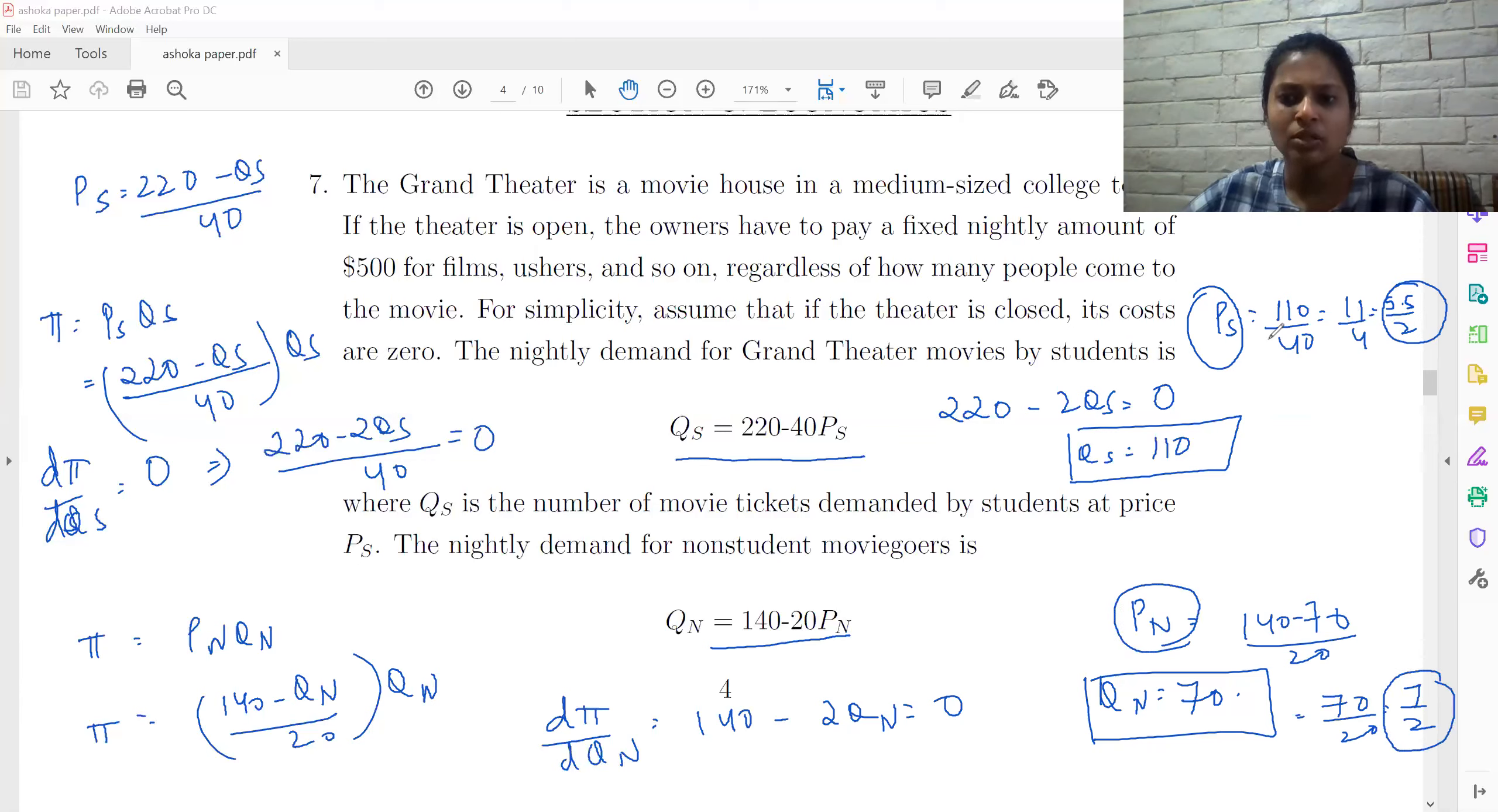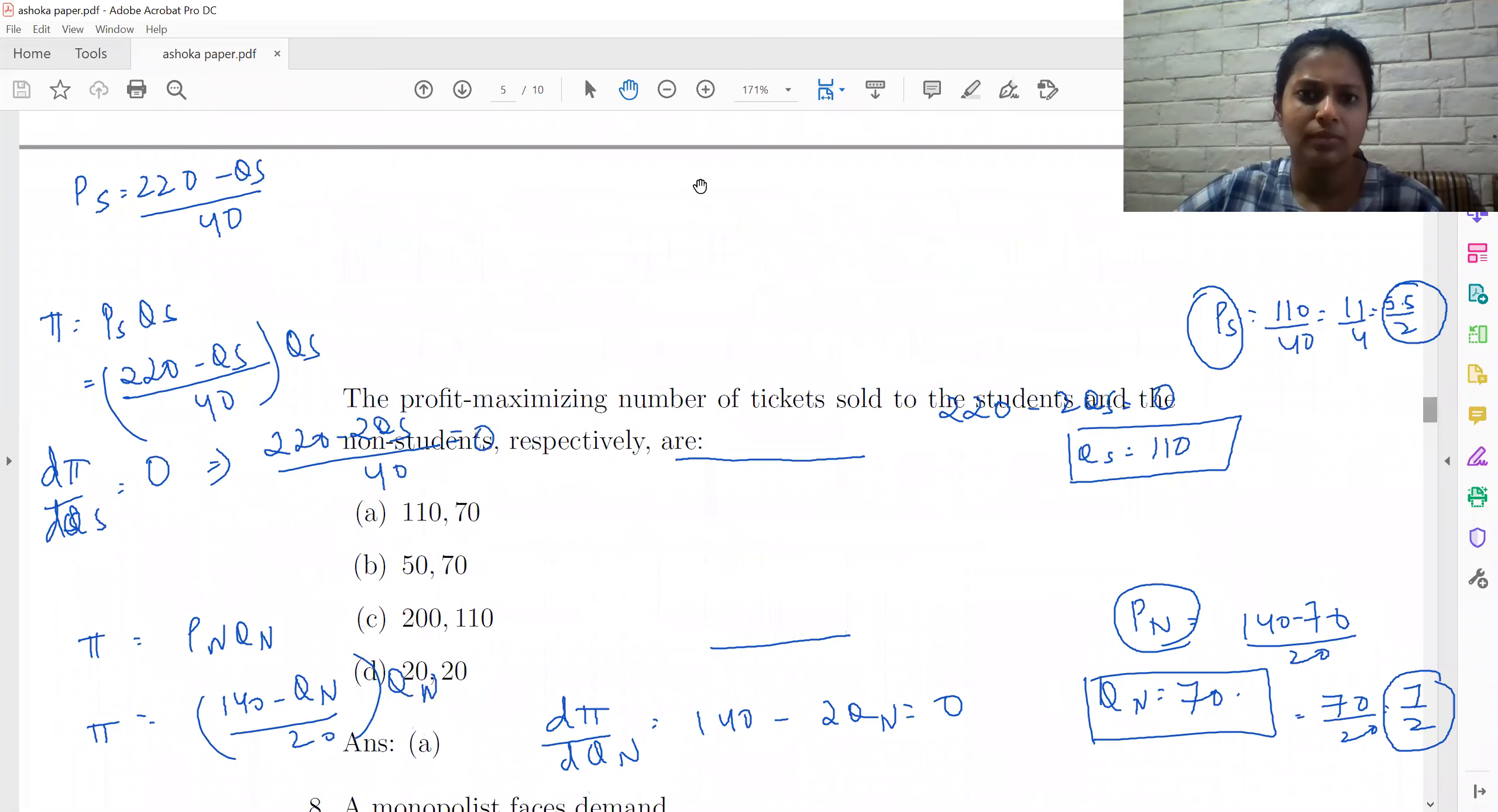So the price charged to students is lower. So these quantities are correct. So QS is 110 and QN is 70. And that is our answer right here. So the answer is A as given to us by Ashoka also.